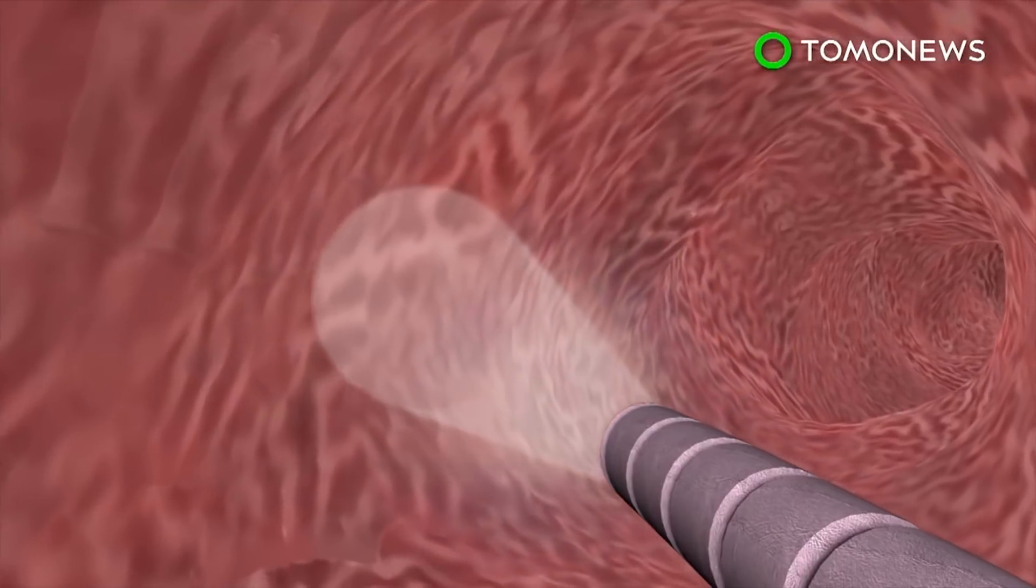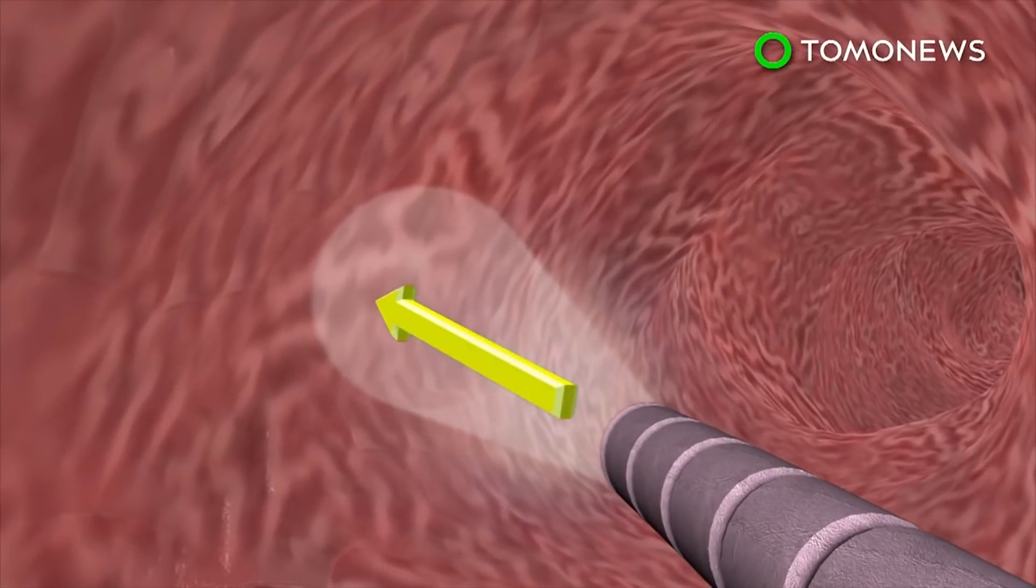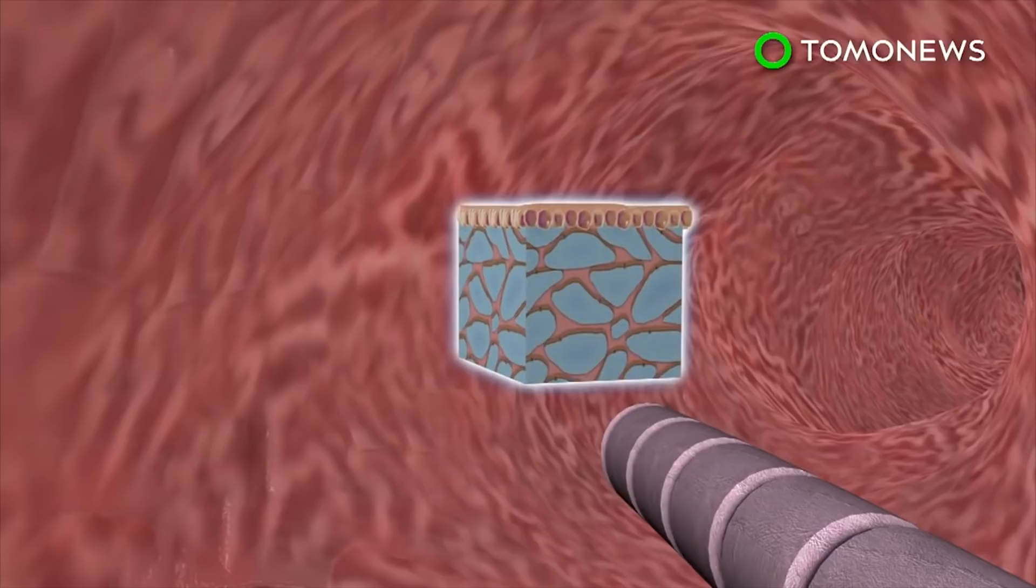Researchers discovered a new organ by accident while looking at a bile duct and noticed tears in dense tissue. They were using a laser imaging technique to measure internal tissue depth via reflected light.